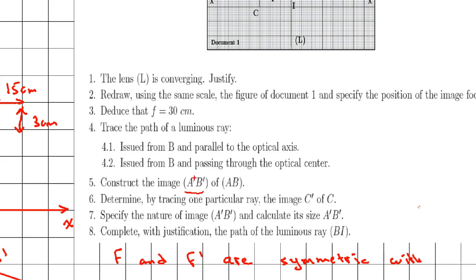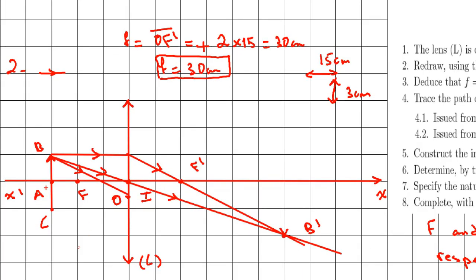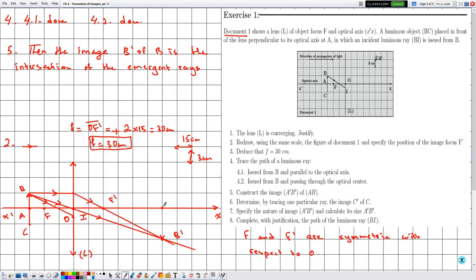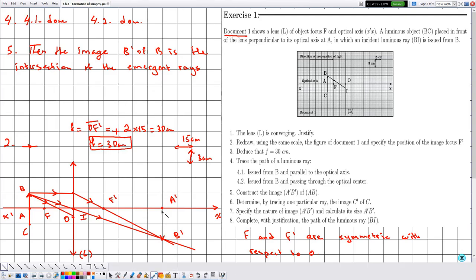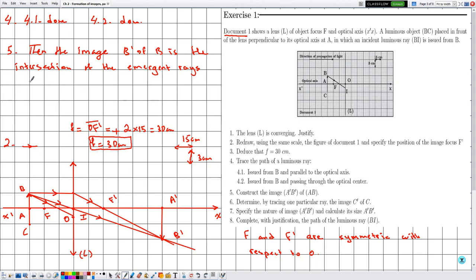The image A'B' consists of two points: B' and A'. We have already traced and justified B'. Now we need to trace A'. Since A represents the foot of the perpendicular from B on the optical axis, A' will also represent the foot of the perpendicular from B' on the optical axis. The justification: A' is the foot of the perpendicular of B' on the optical axis.